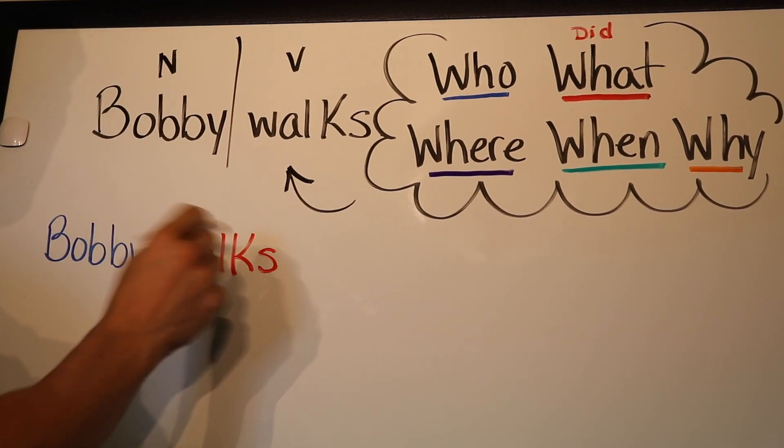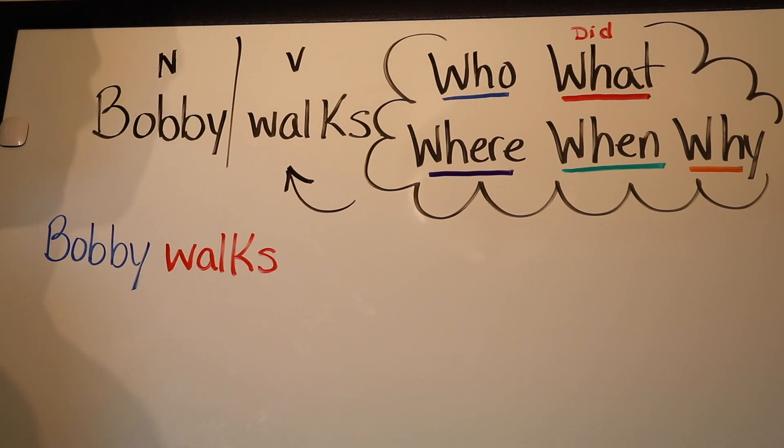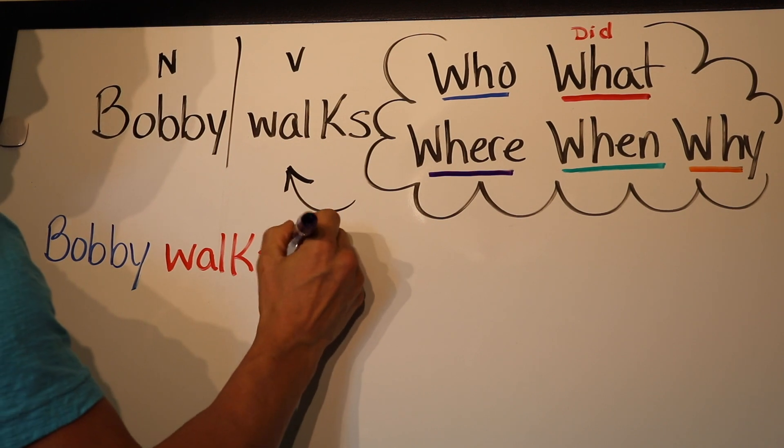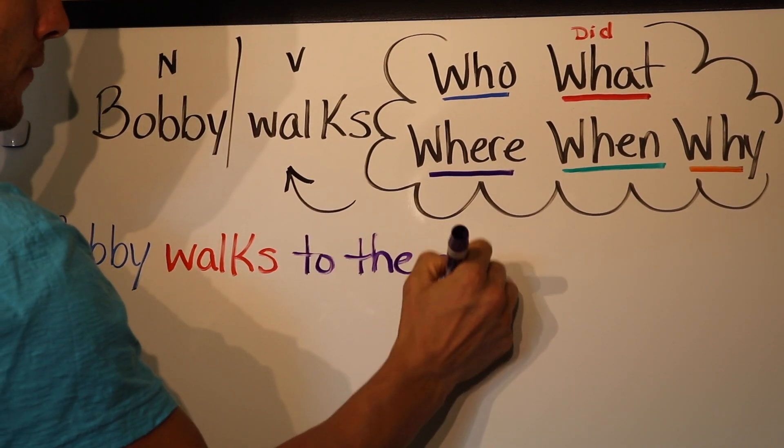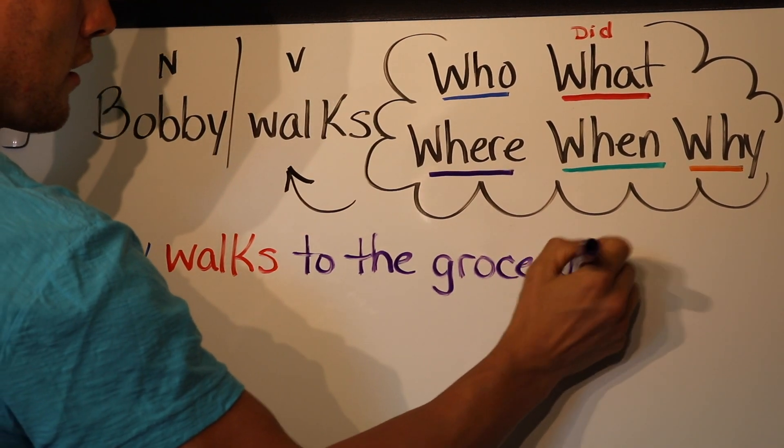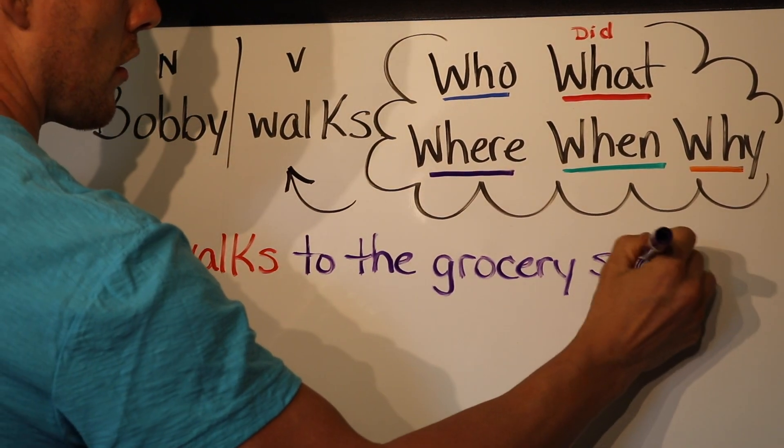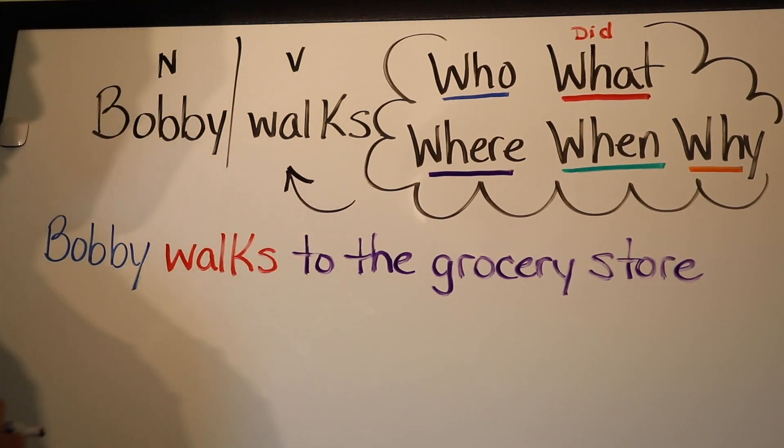So now, Bobby walks. Well, where does Bobby walk? We can ask ourself this next question. There's a lot of different places that Bobby walks, but let's say for today, Bobby walks to the grocery store. Now I could add a period there, but I always encourage my students to write what we call 10-cent sentences.